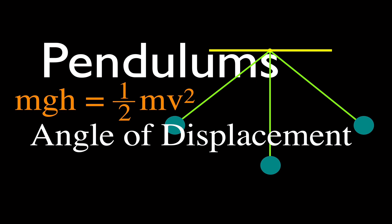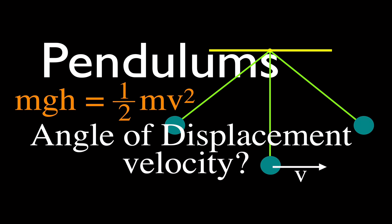In today's video, we are going to go over another example of how we find the velocity of the pendulum as it swings through its equilibrium position. In this video, we're going to be given the angle of displacement. In the previous video, linked in the upper right-hand corner, you were given the height. But this video, we're given the angle of displacement, and then we're going to use conservation of energy.